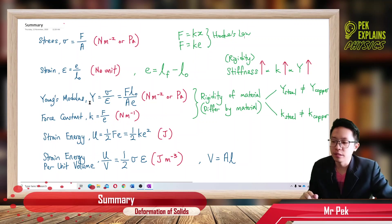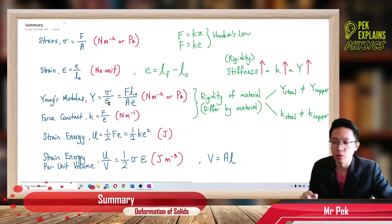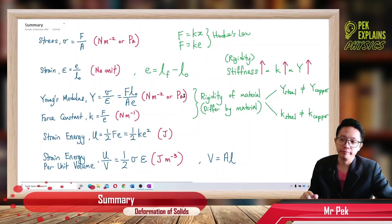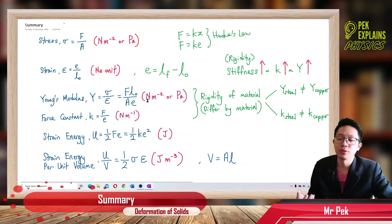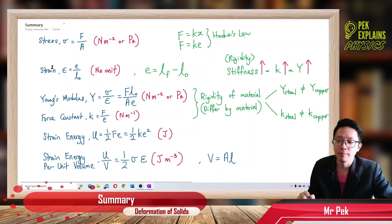About the unit: Young's modulus is stress over strain. Stress is Pascal, strain has no unit. So Pascal divided by no unit gives Pascal. So Young's modulus unit is the same as stress — Newton per meter square or Pascal. Why the same unit? Because strain has no unit, so you are dividing by something with no unit.